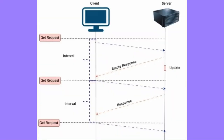In short polling, the client sends a request to the server at predefined intervals, usually less than a minute, asking for updates of the latest information. The server receives the request and processes it. If there is new information, the server responds to the client with the updated data. If there is no new data, the server may respond with an empty message. The client repeats this process at regular intervals, regardless of whether there is new data or not.